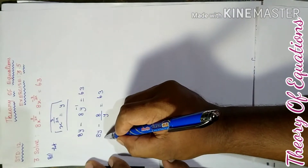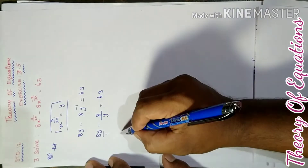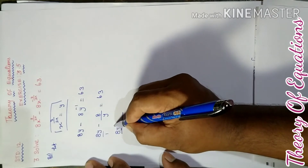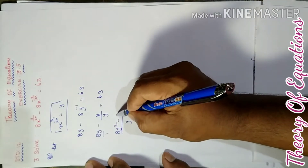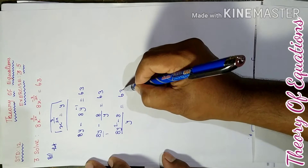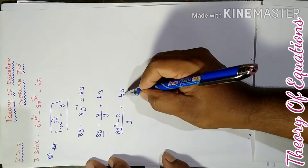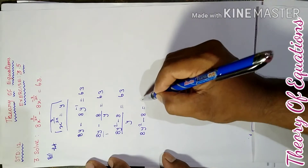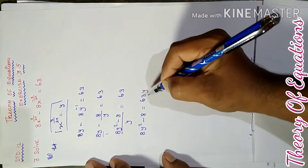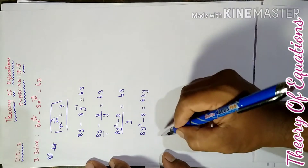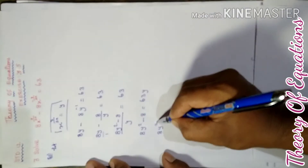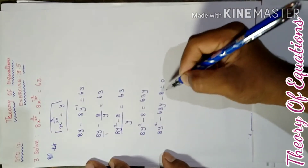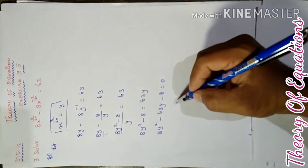By cross multiplication, 8y multiplied by y minus 8 equal to 63y. So 8y square minus 8 equal to 63y. Bringing 63y to the left side, 8y square minus 63y minus 8 equal to 0. That is a quadratic equation.